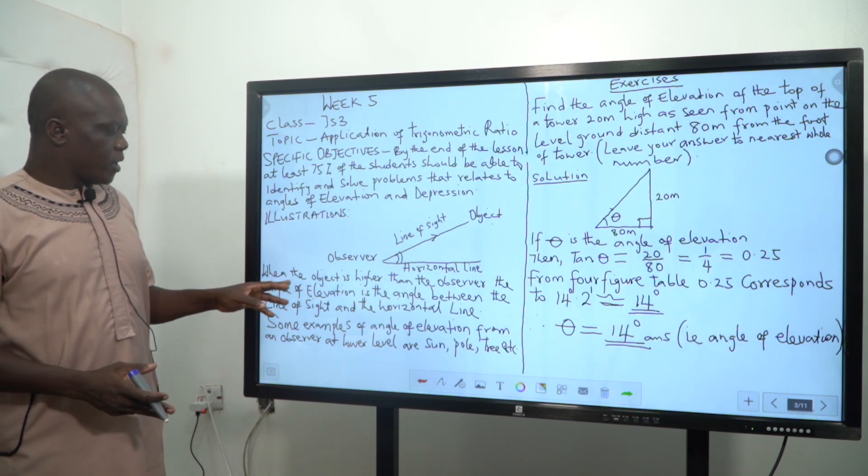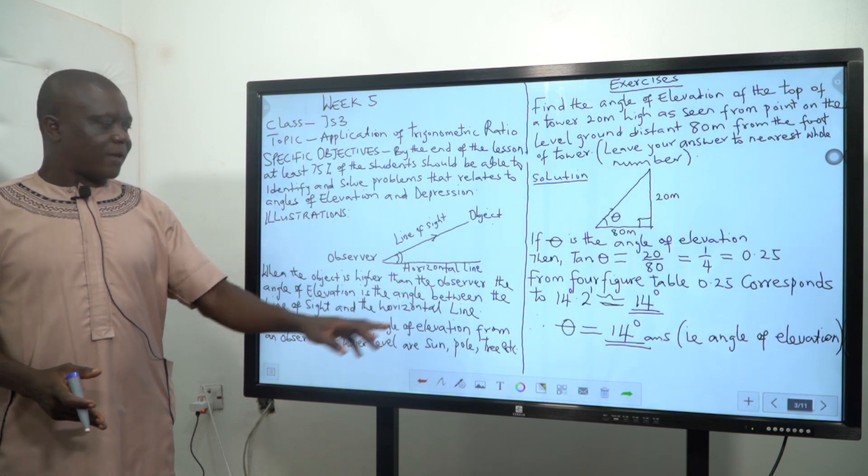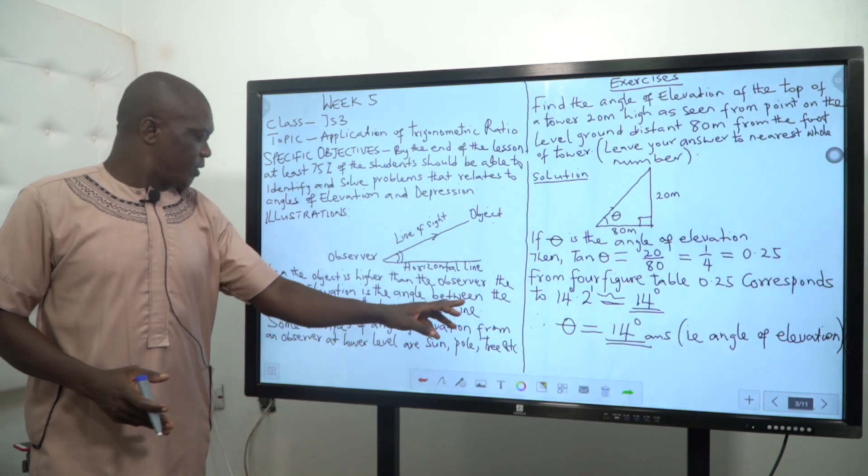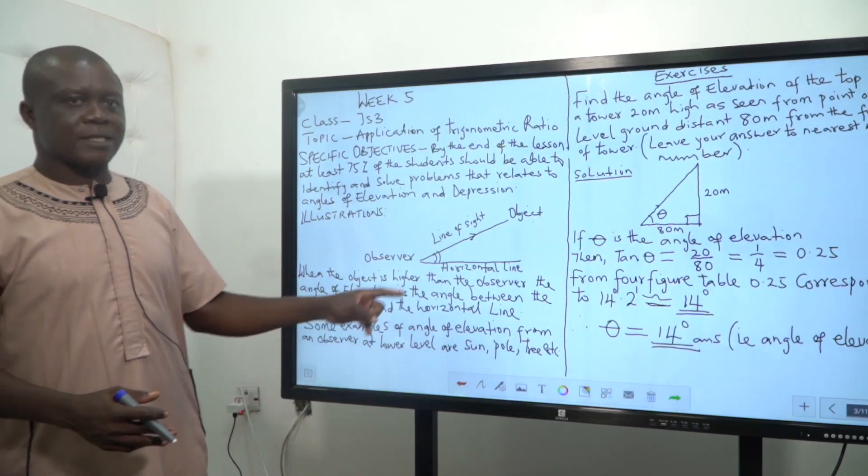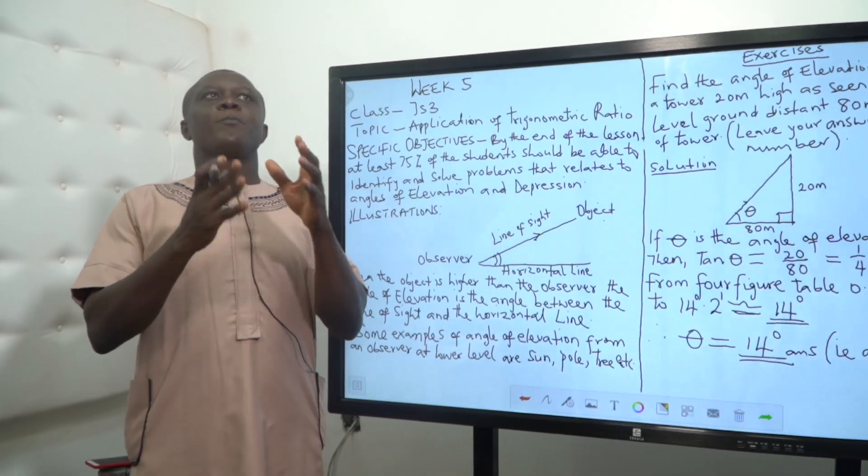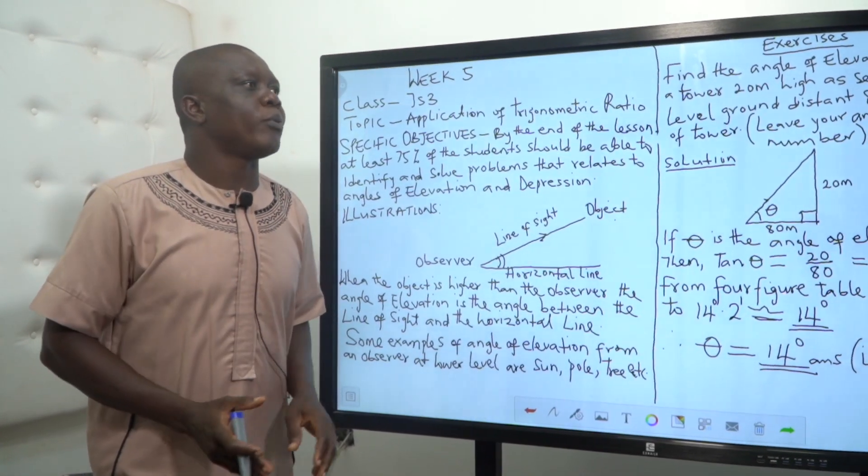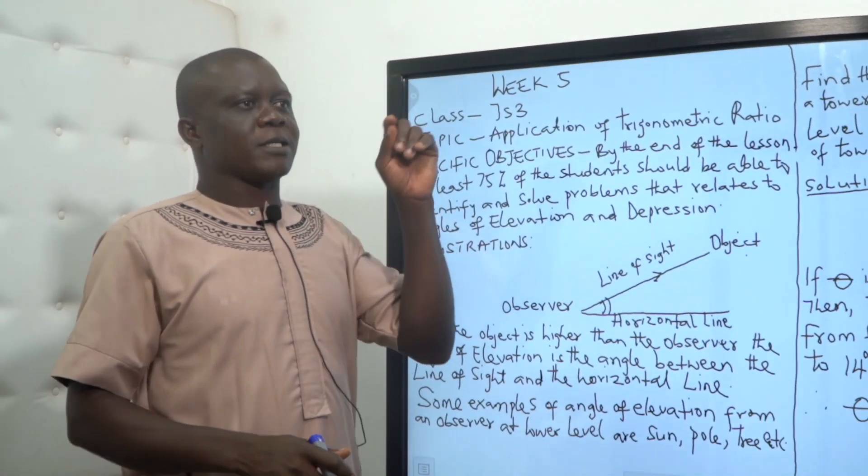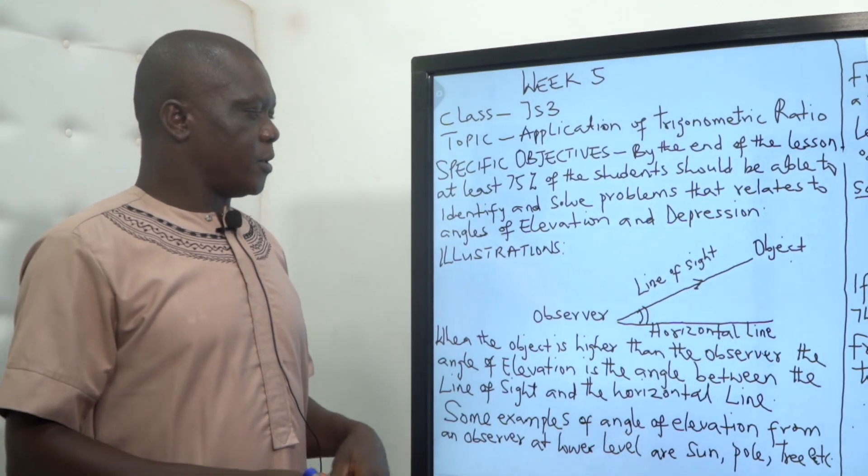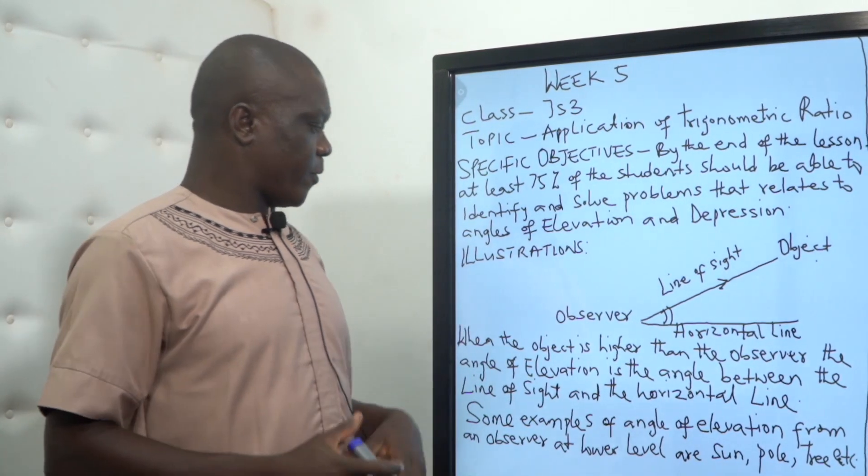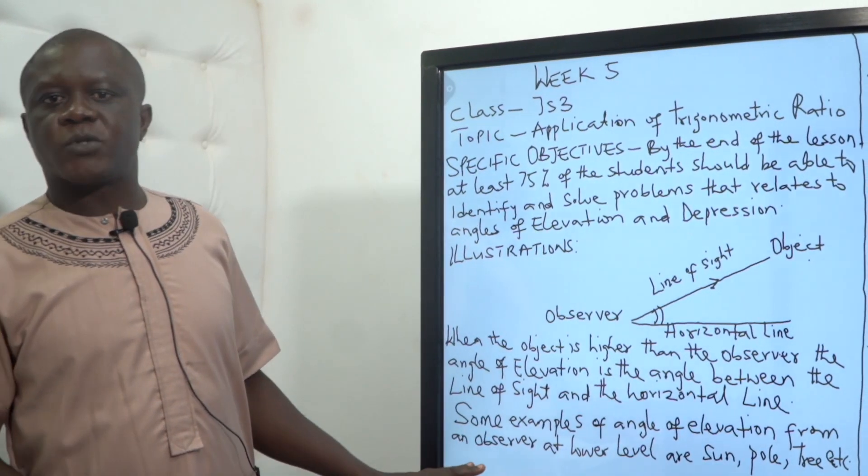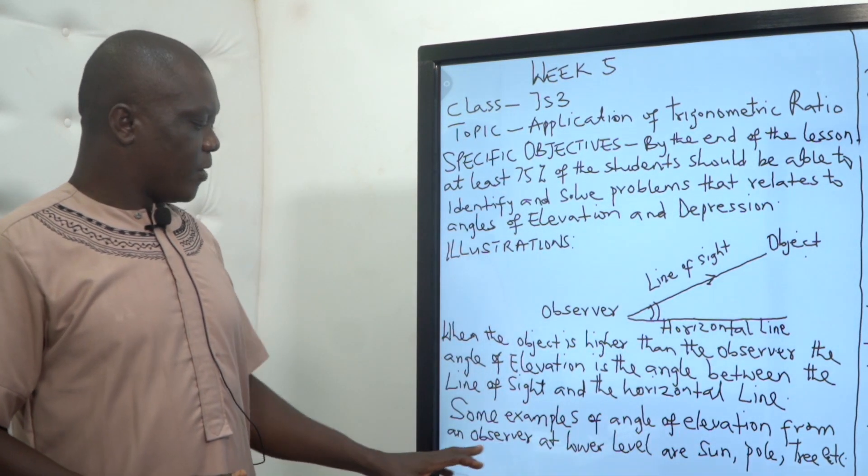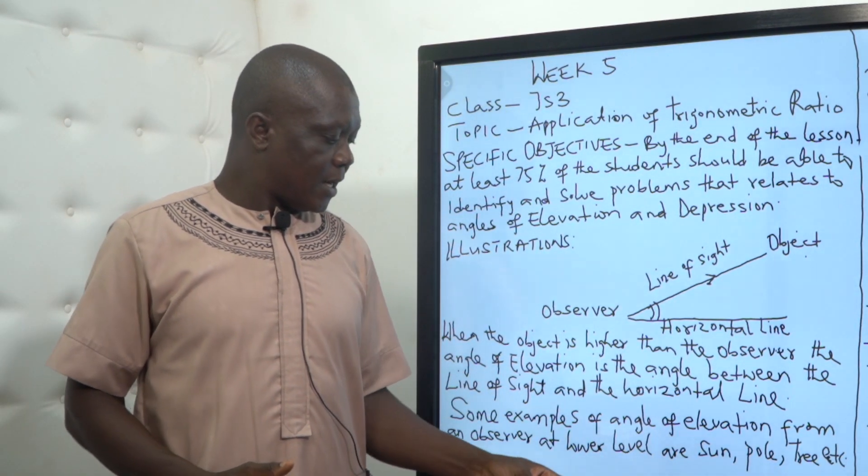When the object is higher than the observer, the angle of elevation is the angle between the line of sight as you are putting your eyes up. Your eyes are making an angle with the object you are looking at, say on top of the tree or on top of the building.